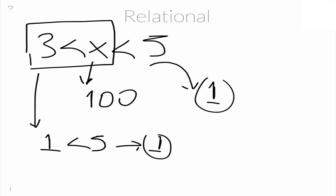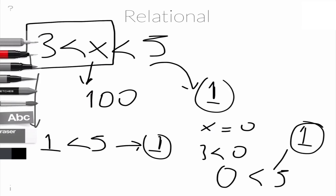What if x is 0? Well, 3 less than 0 is also 1. So 0 is less than 5, so the result is going to be 1 again. So you see the obvious problem.